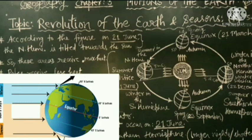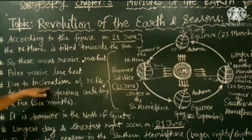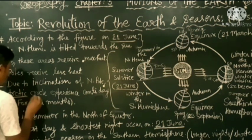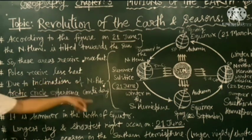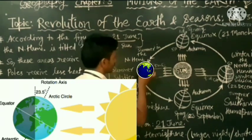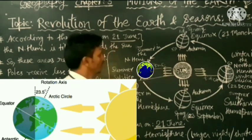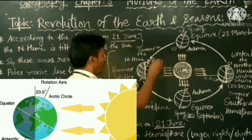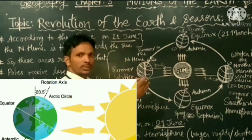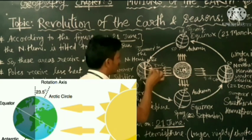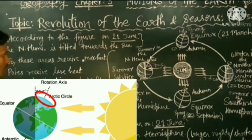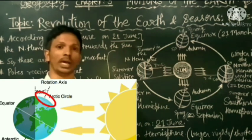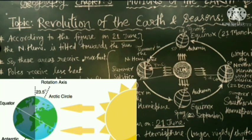Moving to the next point: because of the inclination of the north pole towards the sun, the Arctic Circle experiences a kind of continuous sunlight. Look, this is the Arctic Circle, and because of the inclination of the north pole tilted towards the sun, it receives straight sunlight, and because of this it experiences continuous daylight.